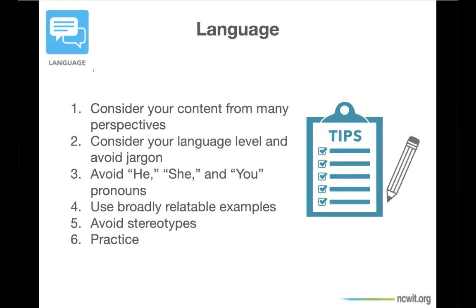The third element is verbal language itself — the words we use and don't use when we speak and write. The following tips are applicable to how you lecture or run labs, how your assignments are written, or how you communicate in informal spaces such as office hours. Here are some general tips for using inclusive language. First, consider your content: is it inclusive of different people and perspectives? If it isn't, how can you make it so? Try alternative approaches for your message and get feedback from colleagues, friends, and students.